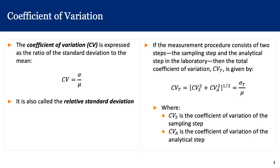If a measurement procedure consists of two steps — a sampling step followed by an analytical step in the laboratory — then the total coefficient of variation Cv is a combination of the Cv of the sampling step and the Cv of the analytical step. The formula is: Cv_t equals the square root of Cvs squared plus Cva squared, which is the total standard deviation divided by mu.